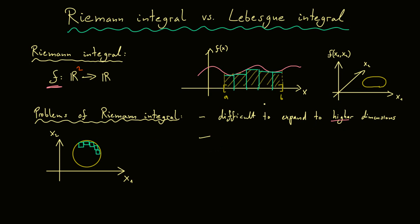The second problem of the Riemann integral is that we need some continuity property for the functions we want to integrate — in other words, we have some dependence on continuity. In the best case, the function should be continuous, then we don't have any problems. However, if we have discontinuity points, there should be only finitely many of them. If we have infinitely many, it can destroy the integrability of the function. The dependence on continuity is indeed a disadvantage of the Riemann integral.